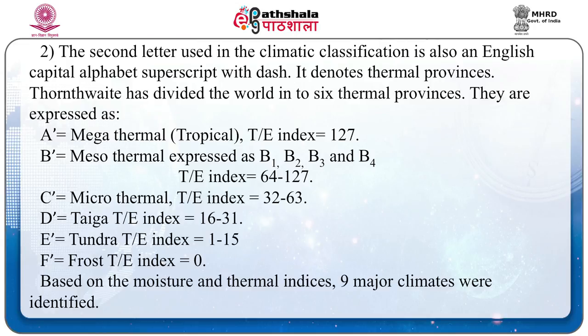The second letter in climatic classification is a capital alphabet with a superscript dash, denoting the thermal province. Thornthwaite divided the world into six thermal provinces: A' mega-thermal tropical with T index above 127; B' mesothermal expressed as B1' to B4' with T index 64–127; C' microthermal with T index 32–63; D' taiga with T index 16–31; E' tundra with T index 1–15; and F' frost with T index 0. Based on moisture and thermal indices, nine major climates were identified.